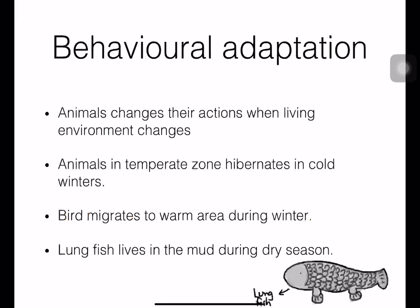Behavioral adaptation means animals change their actions when the environment changes. Animals in the temperate zone hibernate during cold winters — for example, frogs and snakes. Birds migrate to warm areas during winter to find more food. Lungfish live in mud, forming a small sack to live inside and use their lungs to breathe. When rain falls, they come back out into the pond again.